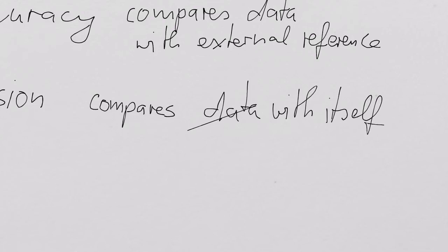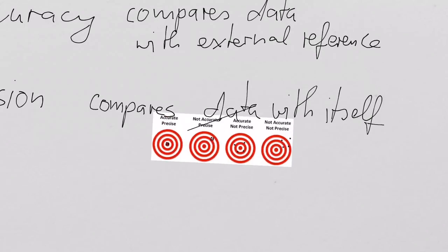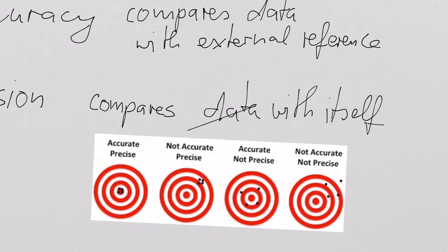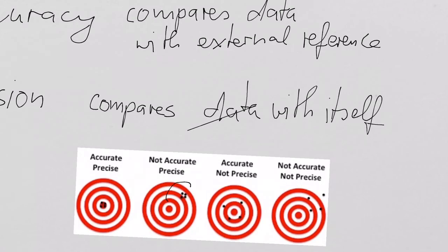Just to illustrate: we basically look at people throwing darts. In this case, the data are very precise — we compare them to itself, the data are very close to each other, but they are quite away from the bullseye. So: precise if we compare the data with itself, but not accurate because they are away from the external reference point.